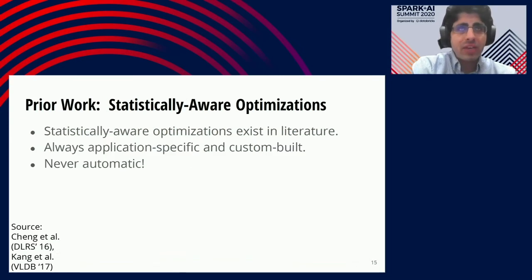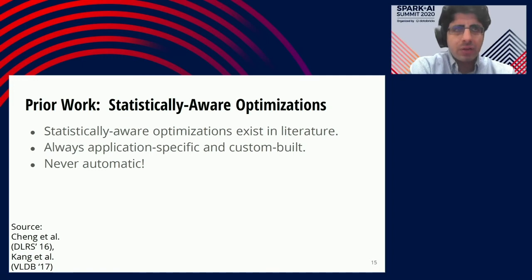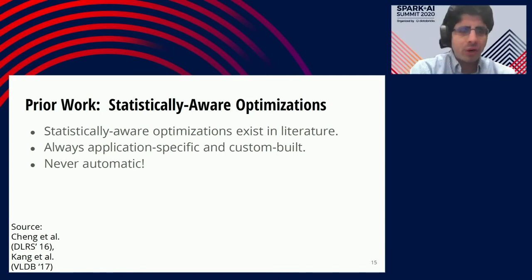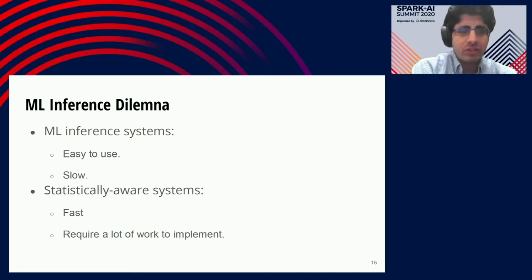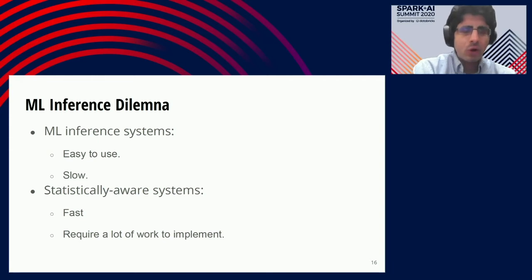These statistically aware optimizations aren't new, and they've been used in both industry and academia for a while. However, existing implementations are application-specific and custom-built. You have to do a lot of work yourself to adapt these optimizations for your particular workload and problem domain — for example, by constructing your own approximate model. This creates a dilemma: ML inference systems are easy to use but slow because they don't implement statistically aware optimizations, while the optimizations are much faster but require significant ML and domain expertise to implement.